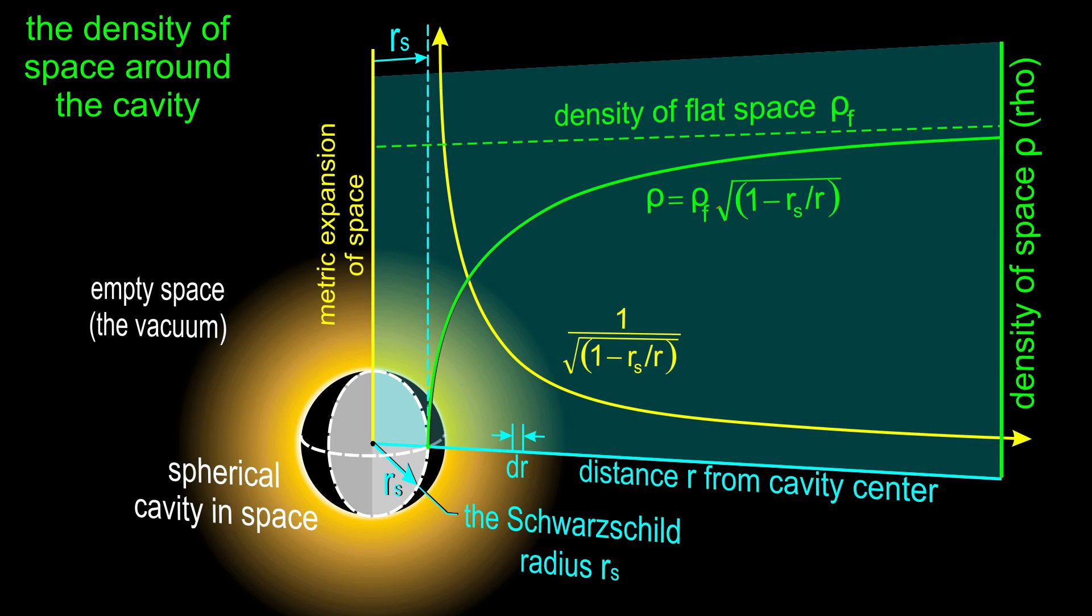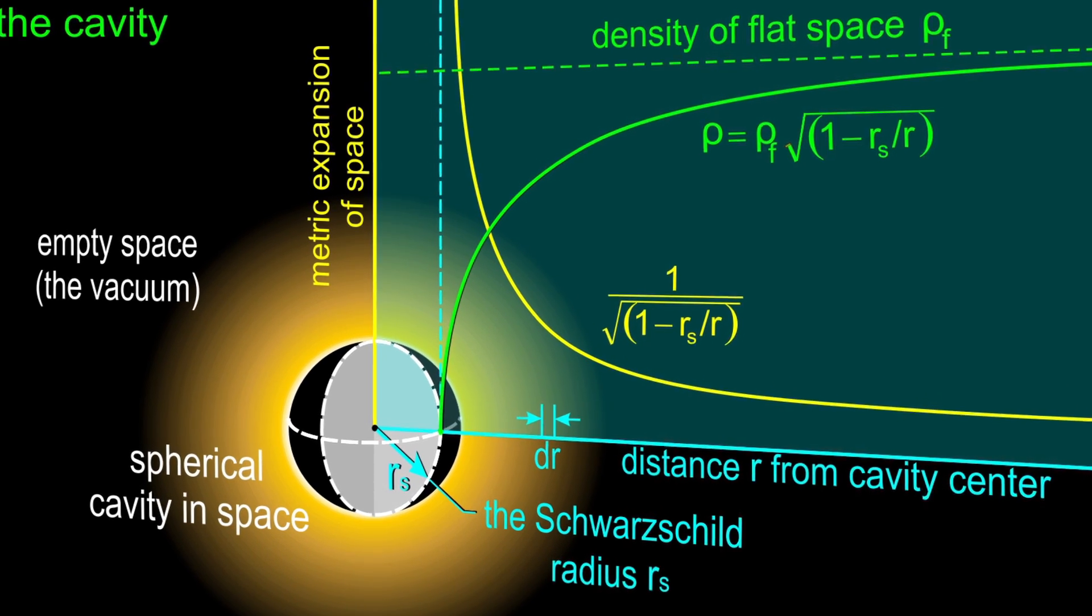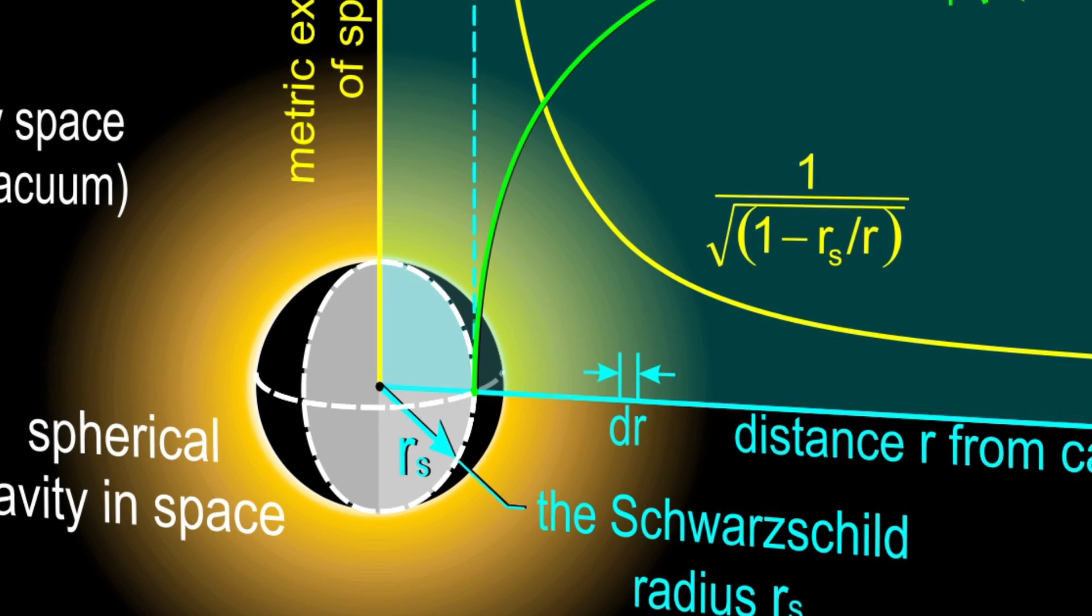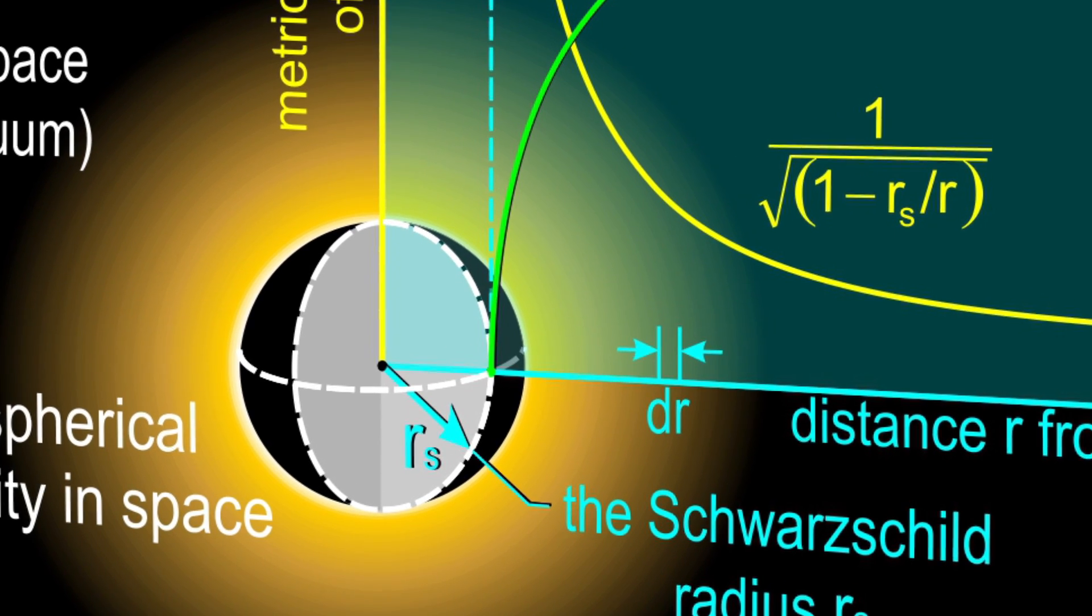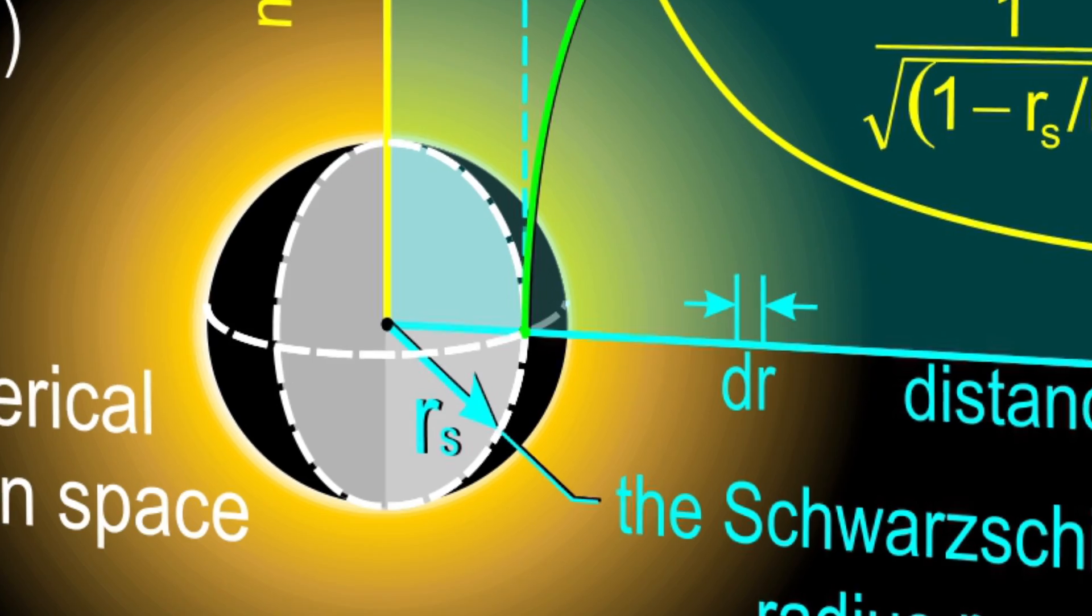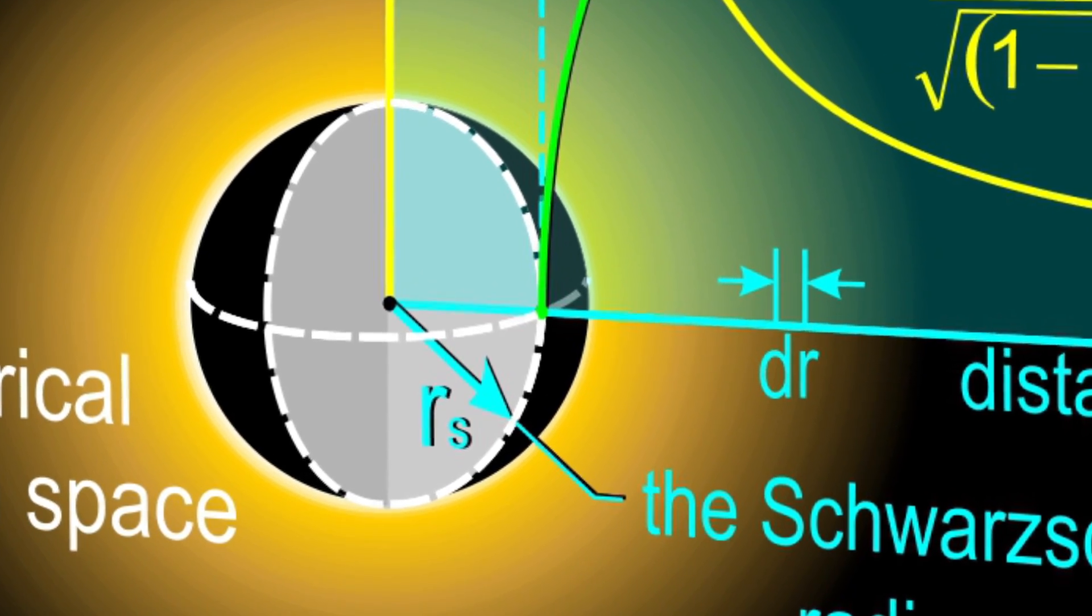Returning to the image of a cavity, we can now see the details of how the cavity's presence would affect the geometry and the density of space around it. We see that as you approach the cavity, the density of space drops off from whatever it was far away from the cavity until, at the Schwarzschild radius, it thins out all the way to zero. Space itself ends at the Schwarzschild radius.